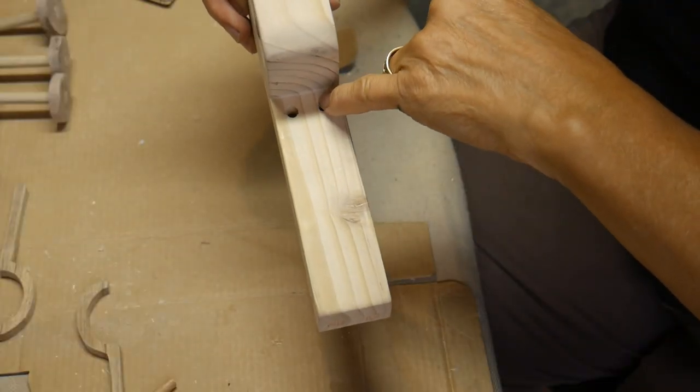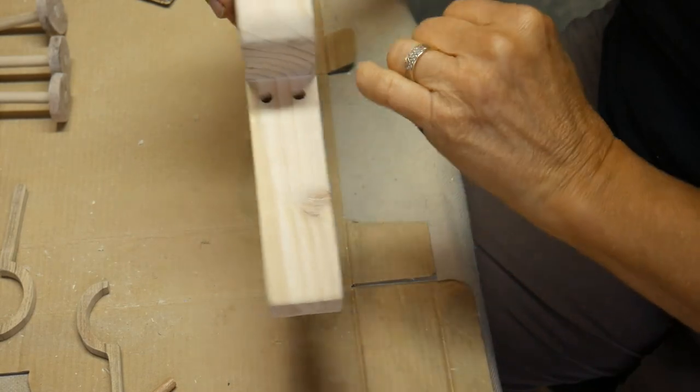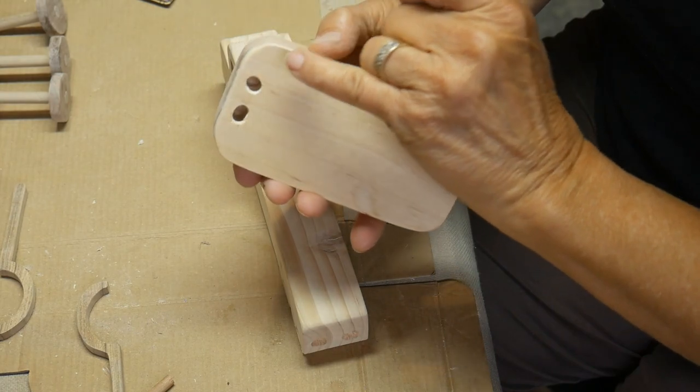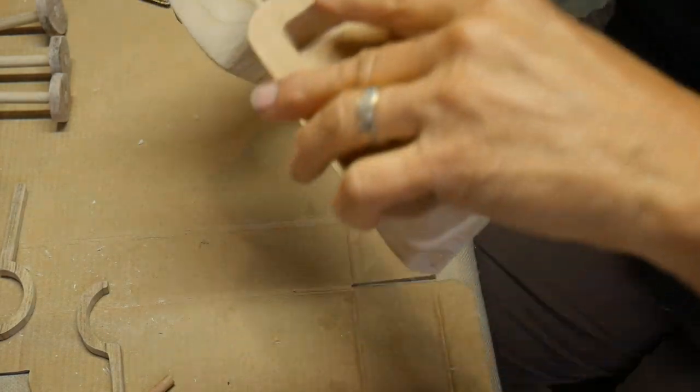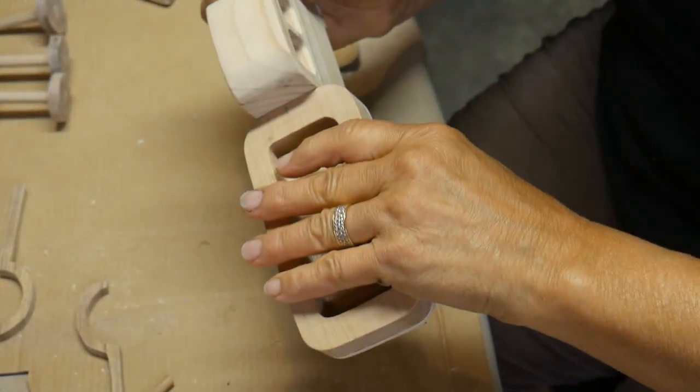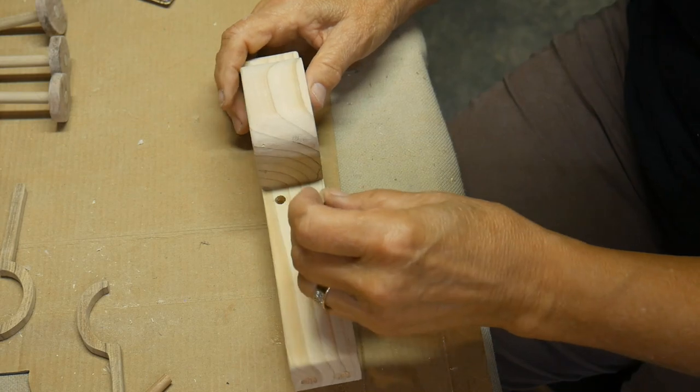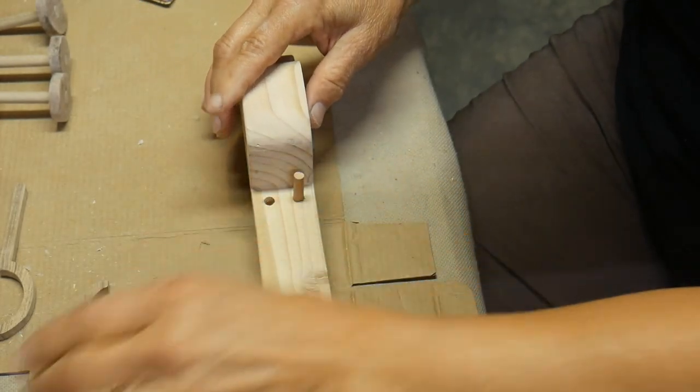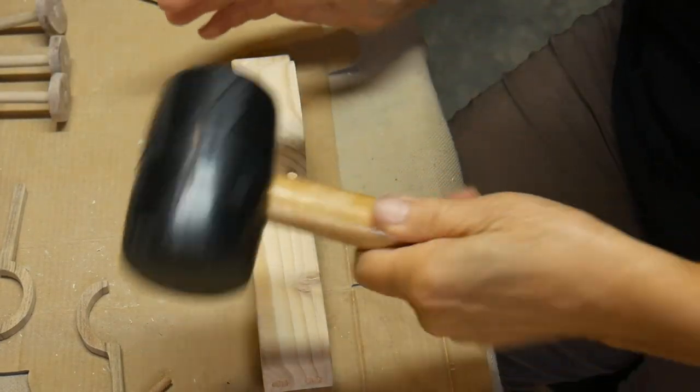I took a quarter inch drill bit and drilled down about a half an inch deep, two holes on this back part and I widened the holes here on the top part of the bed so that it'll be able to fit right on the dowel rods. And I cut dowel rods about an inch long and I'm going to be putting a dab of glue in here and pounding them in to secure them on this piece with my rubber mallet.